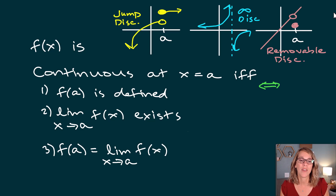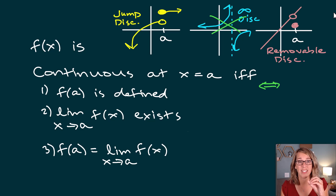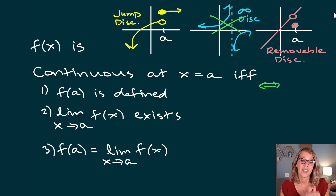First of all, f of a has to be defined. We're good on that in all three example graphs, but that's where the infinite discontinuity fails — there is not a point at a for the blue graph. The second condition is that the limit needs to exist.